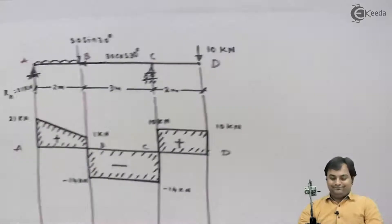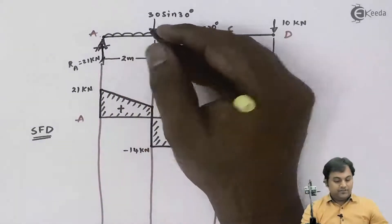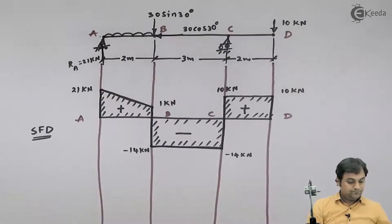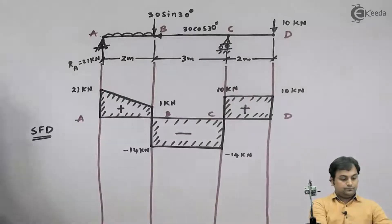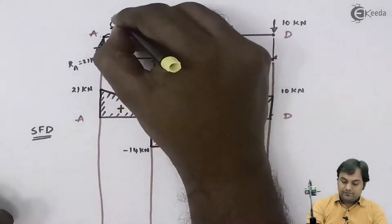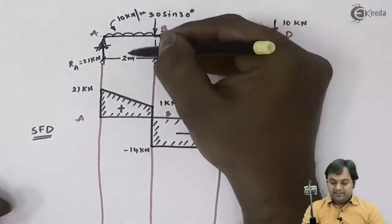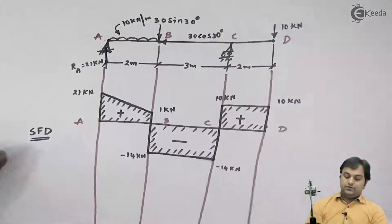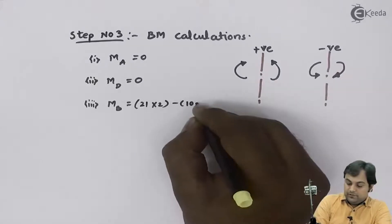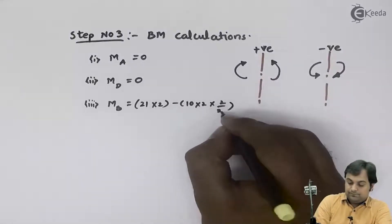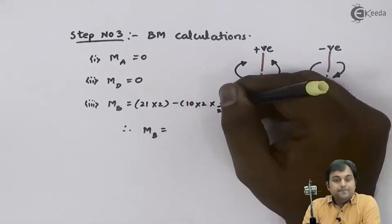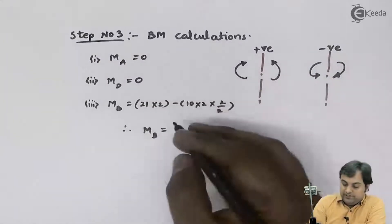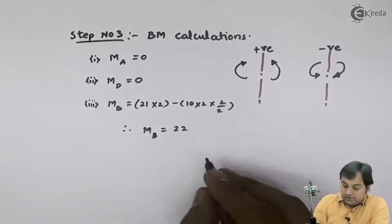The intensity of UDL given in the problem is 10 kN per meter. The UDL contribution is 10 into 2, acting at half the distance, so it is minus 10 into 2 into 1. Therefore, the moment at point B equals 42 minus 20, which gives 22 kNm.